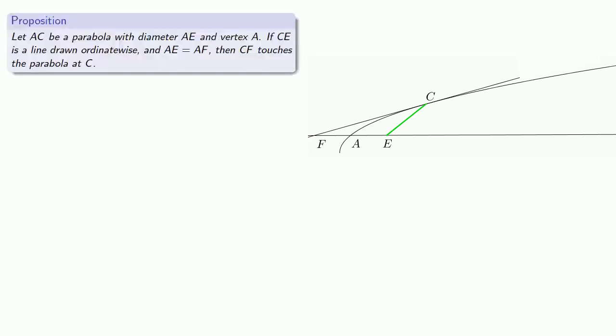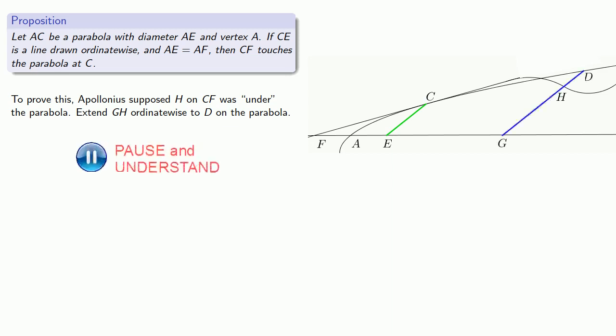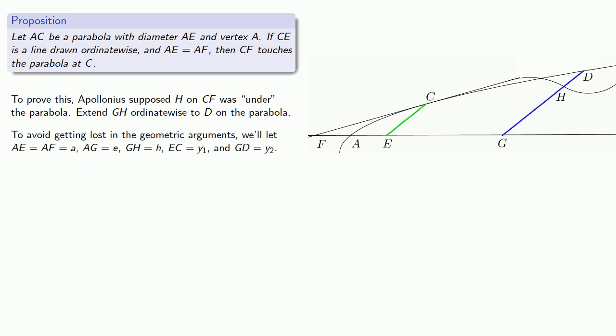To prove this, Apollonius supposes that CH somehow sneaks back under the parabola. Let's extend GH ordinate-wise to D on the parabola. And to avoid getting lost in the geometric argument, we'll let AE equal AF equal A.